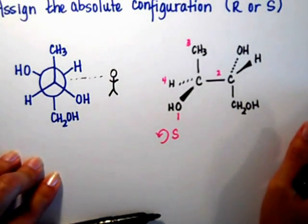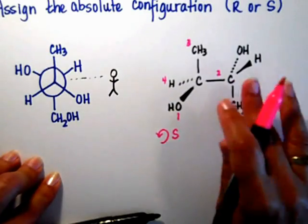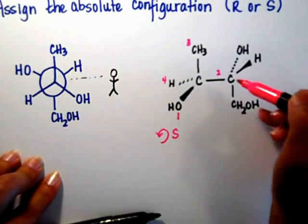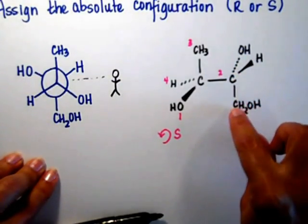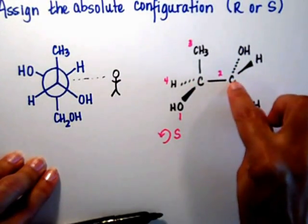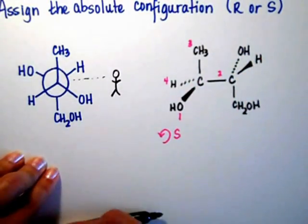Let's do the exact same thing on the carbon that's on the right. What do I have attached to it? I have oxygen, carbon, carbon, and a hydrogen. The hydrogen is in the front.